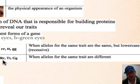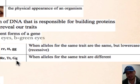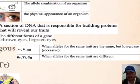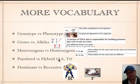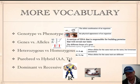Now let's look at heterozygous: you have a capital and a lowercase — big R little r, big T little T, big G little g — when alleles for the same trait are different, that's heterozygous. Purebred is another way of saying homozygous, and hybrid is another way of saying heterozygous. Big A big A is homozygous or purebred; big A little a is hybrid or heterozygous.